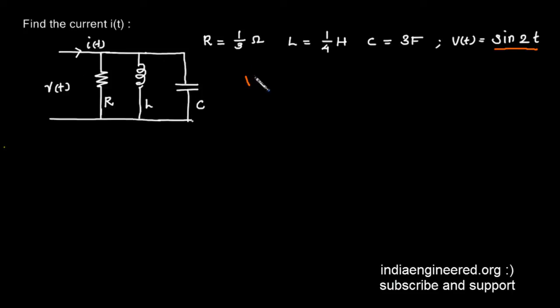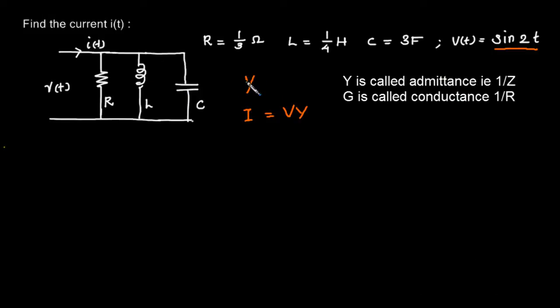Then what is the current will be the voltage into conductance. Now what is the conductance? Conductance is 1/R. So what is the total conductance? If we have three parallel branches it will be the sum of individual conductances. That means Y should be...